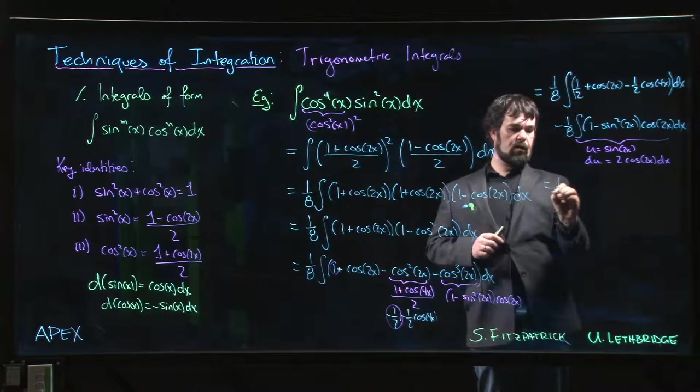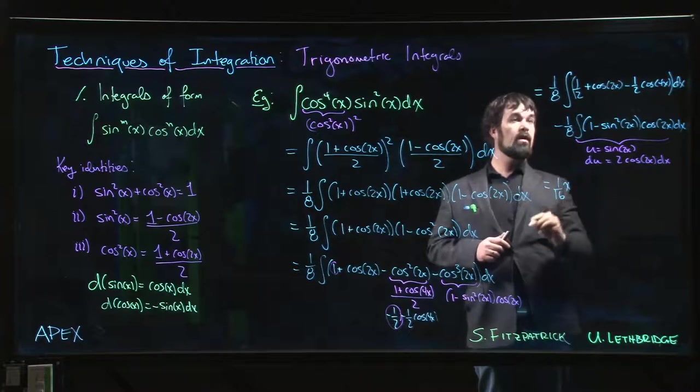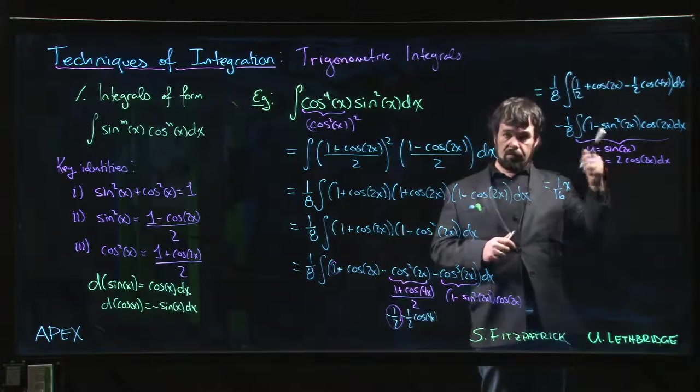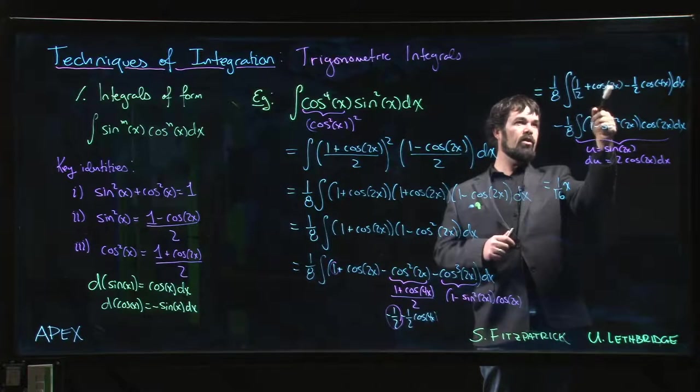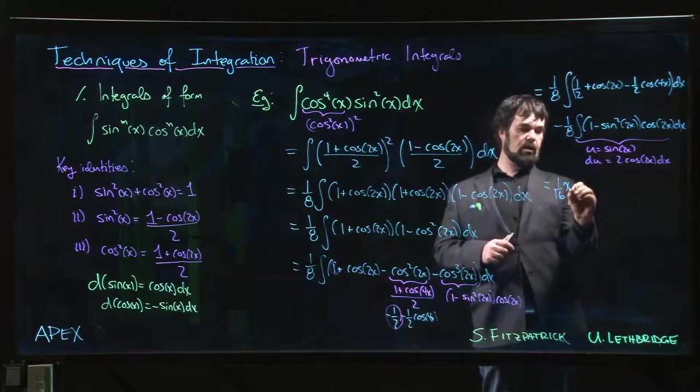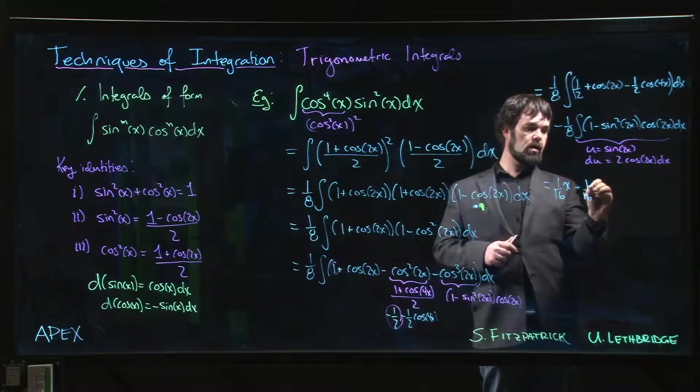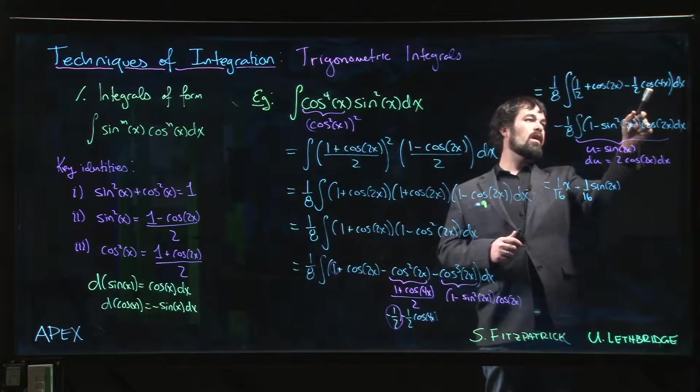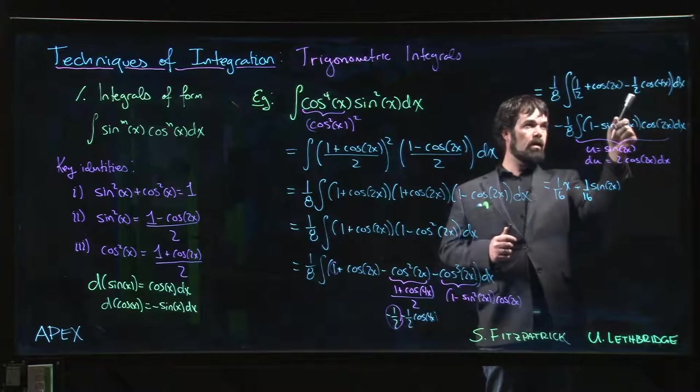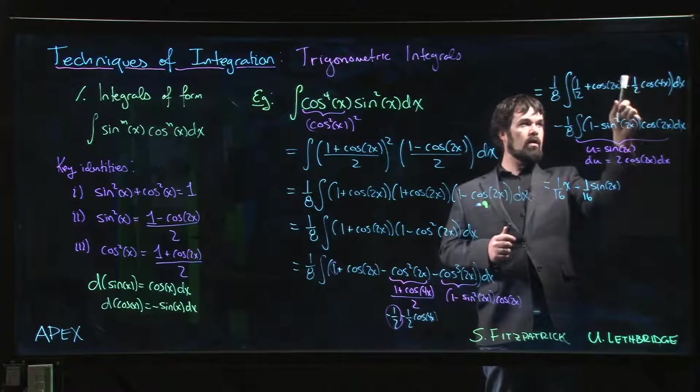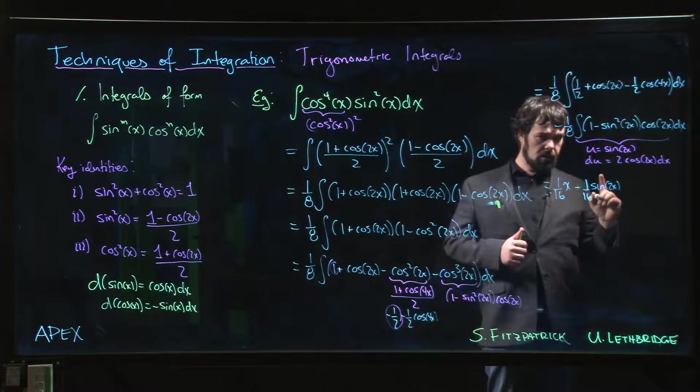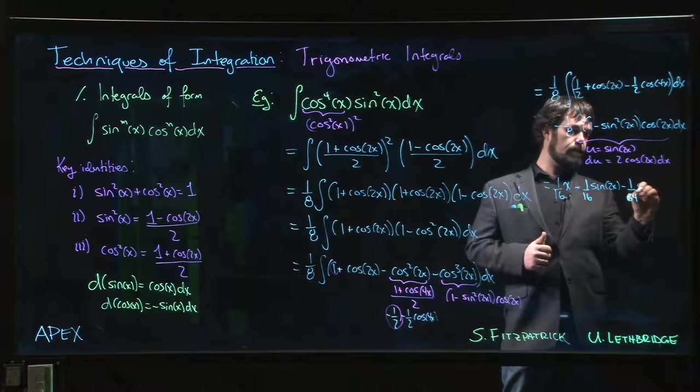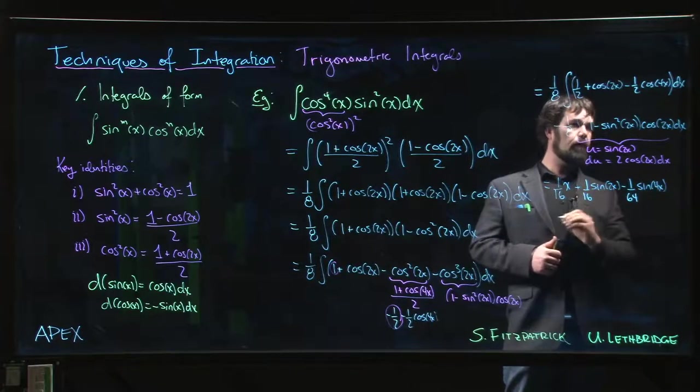Let's see if we can do this. 1 over 8 times 1 half, there's 1 over 16. I'm going to start doing the antiderivatives. So 1 over 16, integrate that, we get x. Cosine gets sine, but that 2, we get sine 2x, but we've got to divide by 2. So we get 1 over 16 sine 2x. Coming to this one, we're going to get sine 4x, but we've got to divide by 4. So we have 1 quarter times 1 half times 1 eighth, 1 over 64.